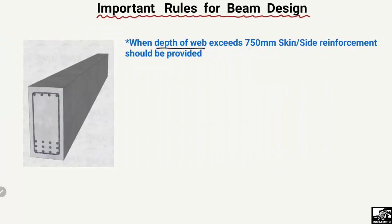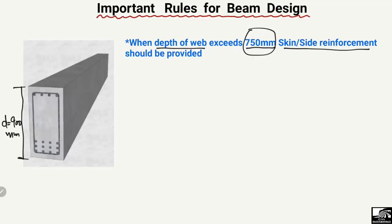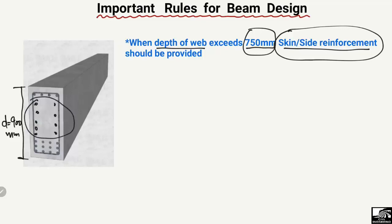The fifth point states that when the depth of the beam exceeds 750 mm, skin or side reinforcement should be provided. For example, if the depth is 900 mm, which is more than 750 mm, reinforcement must be provided along the whole depth of the beam. This is known as side or skin reinforcement, and it is used to resist the cracks occurring along the depth of the beam due to its high depth.